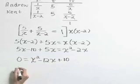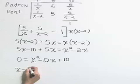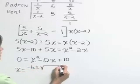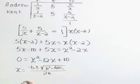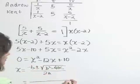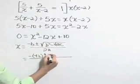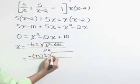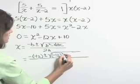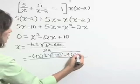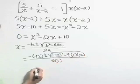Now let's use our quadratic formula. So x is equal to negative b plus or minus the square root of b squared minus 4ac all over 2a. Let's substitute values. So we will have a negative of negative 12 plus or minus the square root of negative 12 squared minus 4 times a, which is 1, times c, which is 10, all over 2 times a, or 2 times 1.